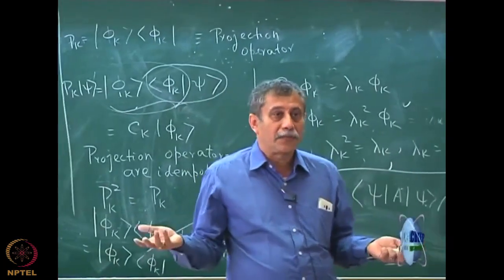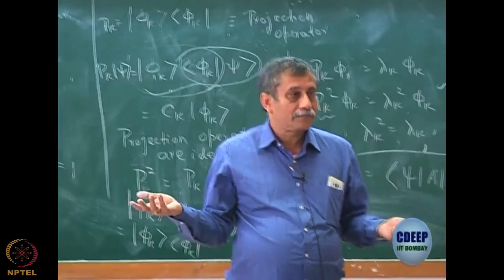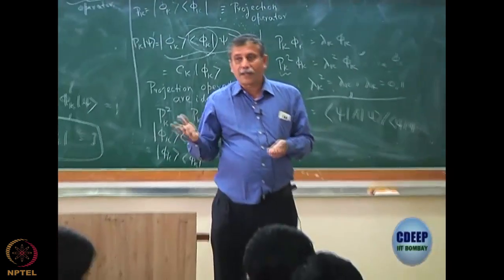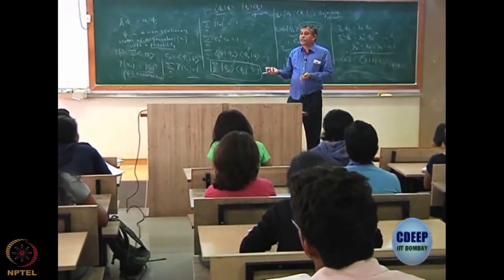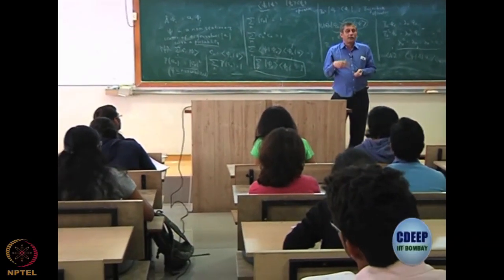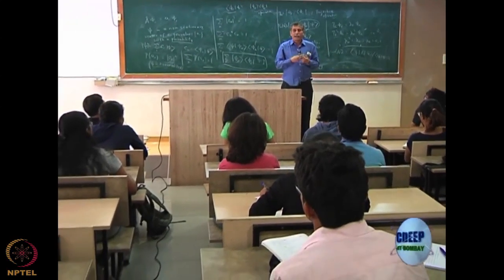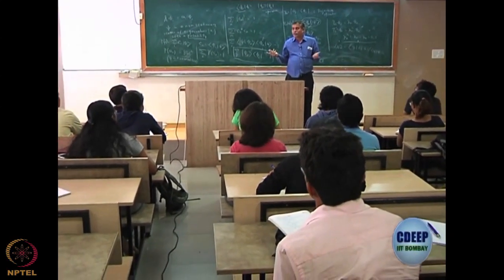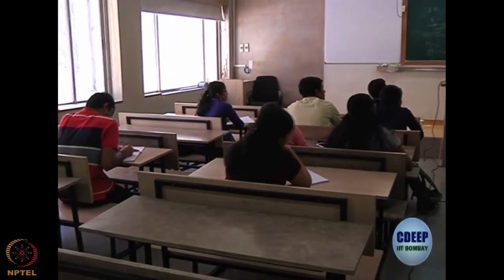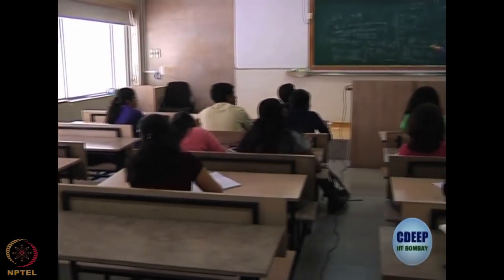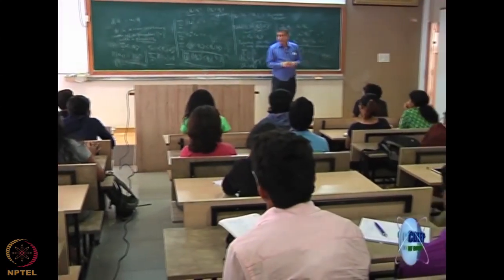It would be very nice if a state is an eigenstate of the Hamiltonian as well as an eigenstate of other operators — that is what symmetry achieves. If you remember group theory, it essentially finds operators that commute with the Hamiltonian, because if two operators commute, they have simultaneous eigenfunctions. So if the operators commute with each other, the Hamiltonian eigenfunctions will also be eigenfunctions of them. That is a very nice thing, but it is not always true.